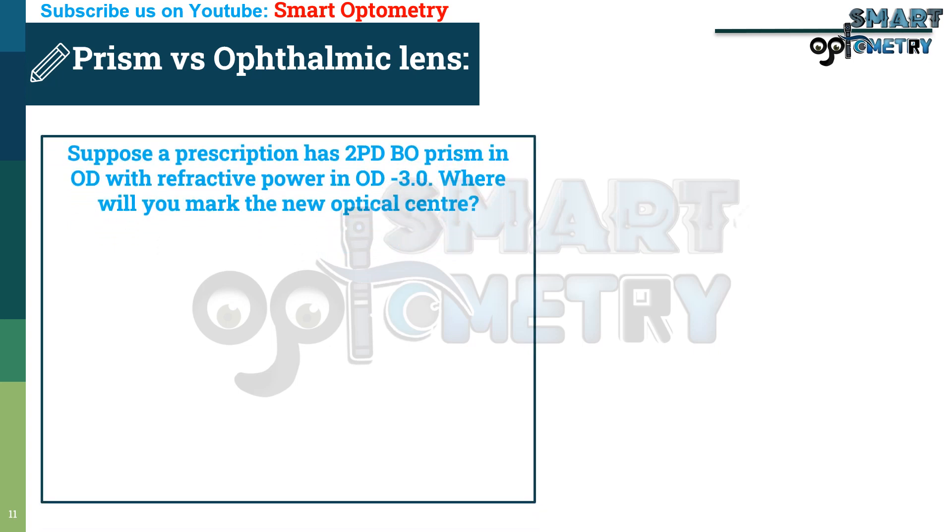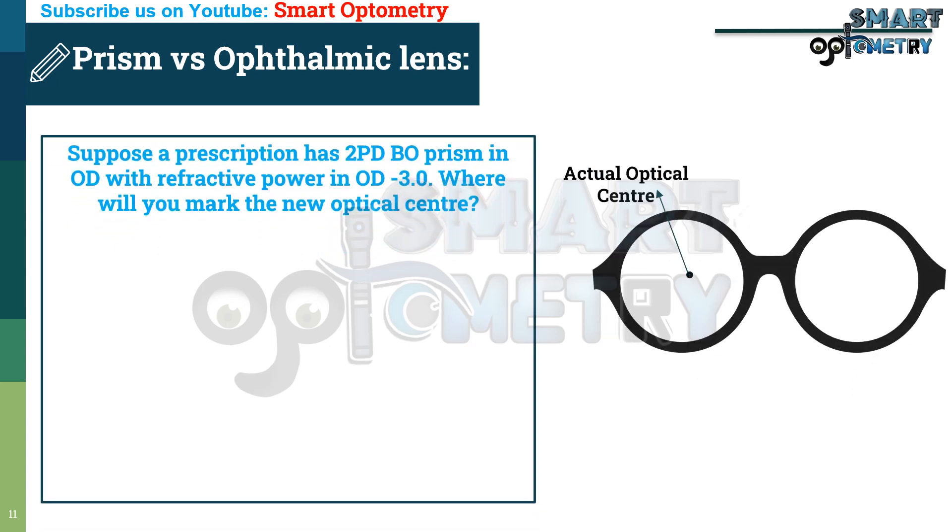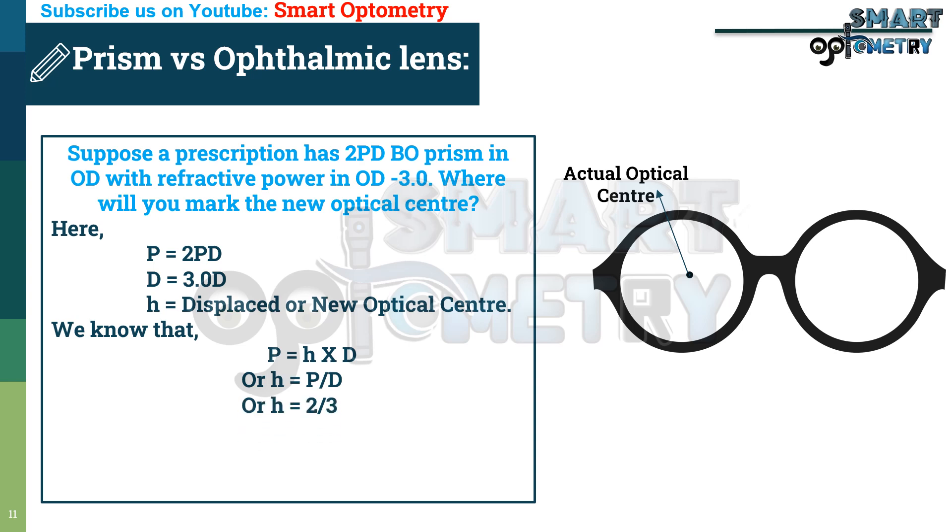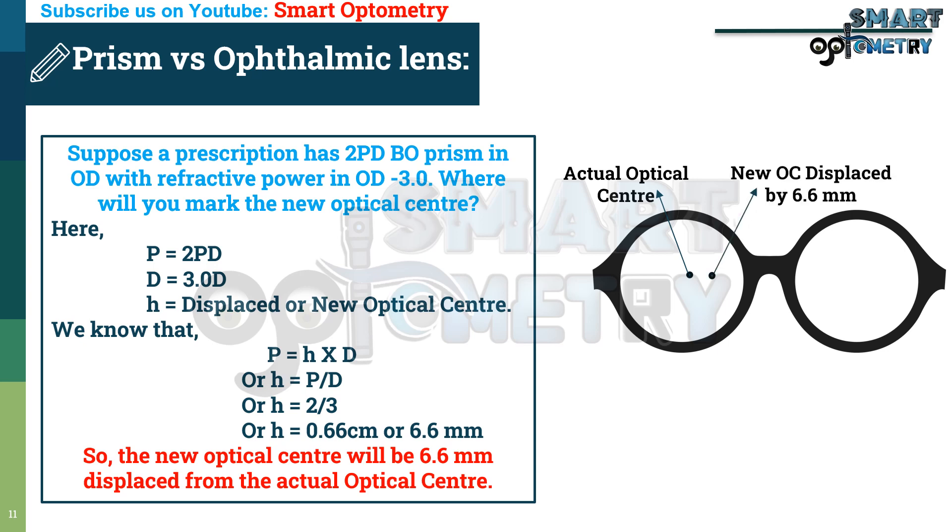Now, let's see an example. Suppose a prescription has 2 prism diopters based out prism in OD with refractive power in OD minus 3 diopters. Where will you mark the new optical center? Here, P is equal to prism power which is 2, D is equal to spectacle power which is 3, and H is equal to 0.66 cm or 6.6 mm. So, the new optical center will be 6.6 mm displaced or away from the actual optical center.